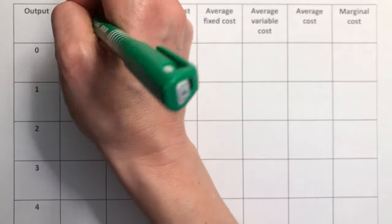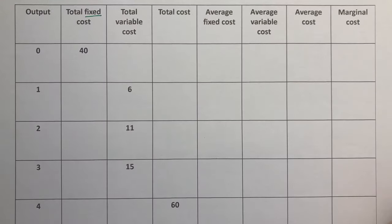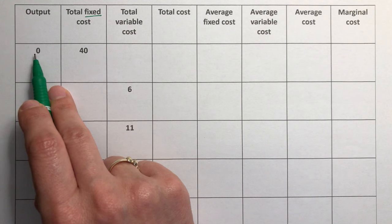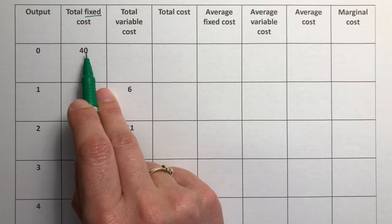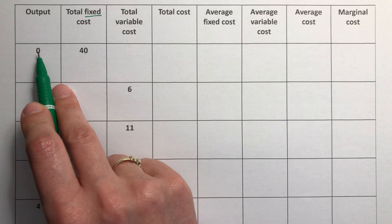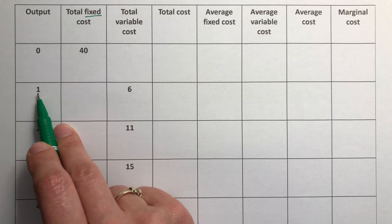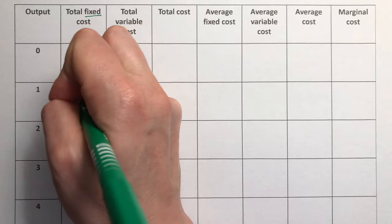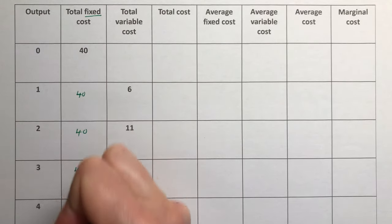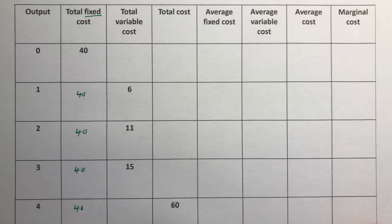The total fixed cost — the nature of a fixed cost is that it stays the same no matter what the level of output is. So even when you're not producing any cars you still have to pay £40 in fixed costs. This would be things like rent and insurance. If they produce one car, the fixed cost is still £40. Two, three, or four cars — it's always £40.